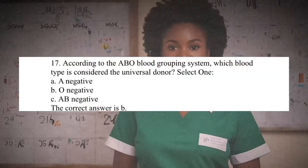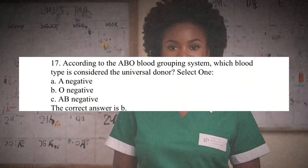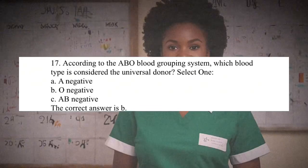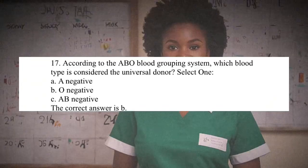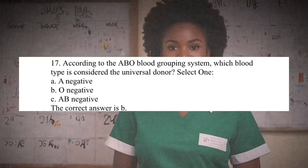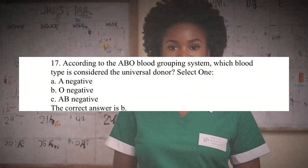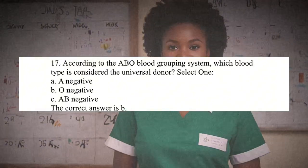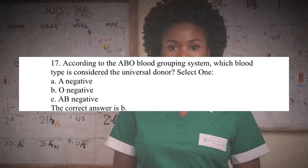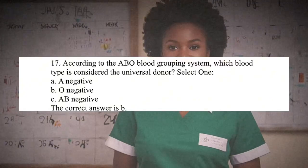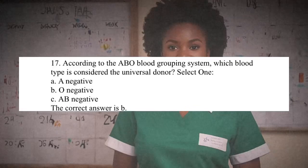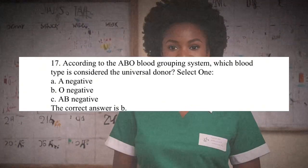Question 17: According to the ABO blood grouping system, which blood type is considered the universal donor? A. A negative. B. O negative. C. AB negative. The correct answer is B. Individuals with O negative blood type are considered universal donors because their red blood cells do not have A, B, or RH antigens, which can potentially trigger an immune response in the recipient.